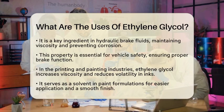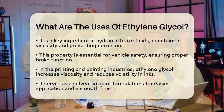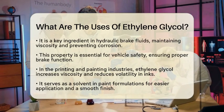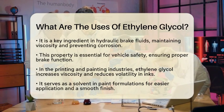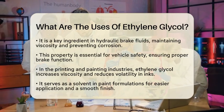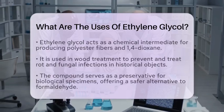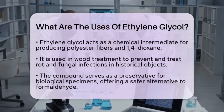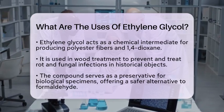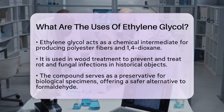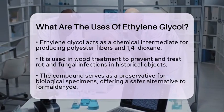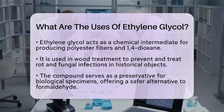Ethylene glycol also acts as a chemical intermediate in producing other chemicals such as polyester fibers and 1,4-dioxane. In wood treatment, it helps prevent and treat rot and fungal infections, especially in historical wooden objects displayed in museums. Moreover, it is used as a preservative for biological specimens, offering a safer alternative to formaldehyde in educational settings.